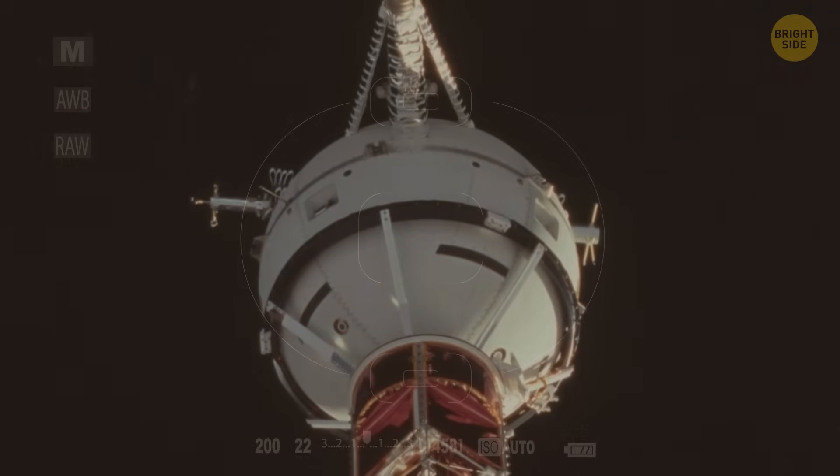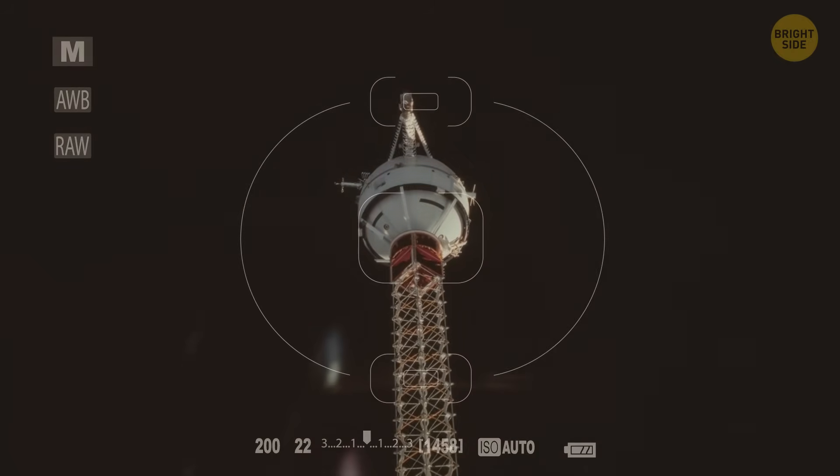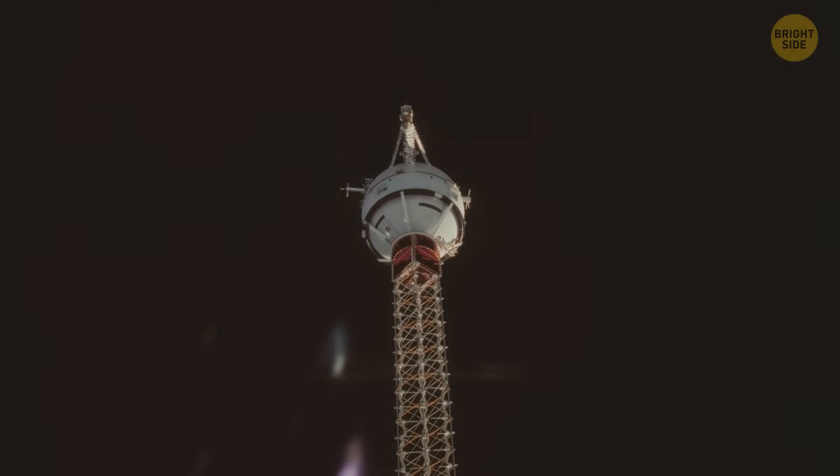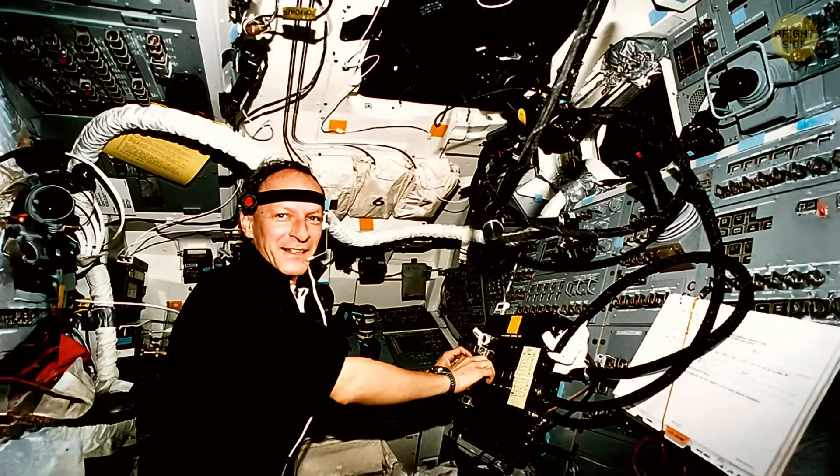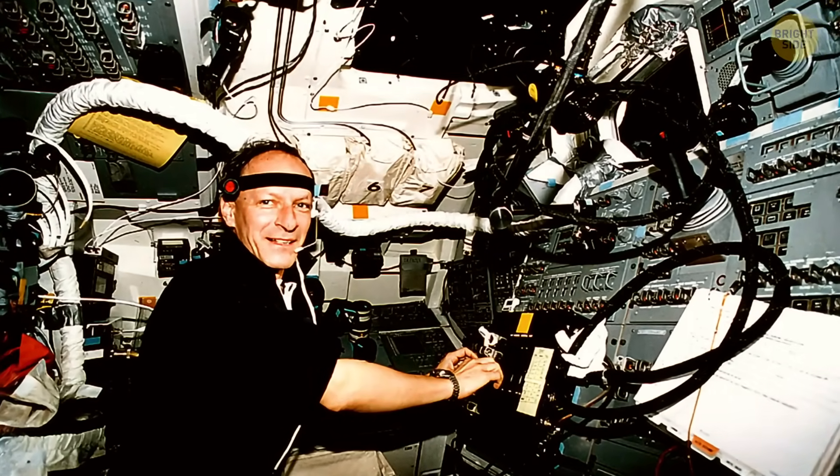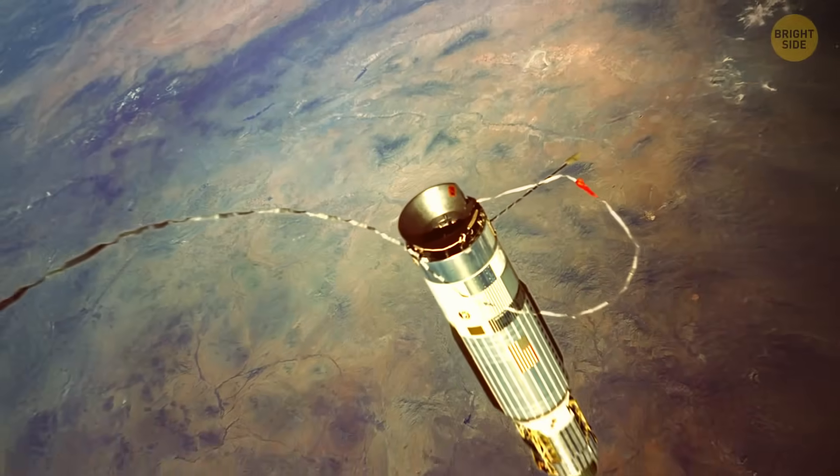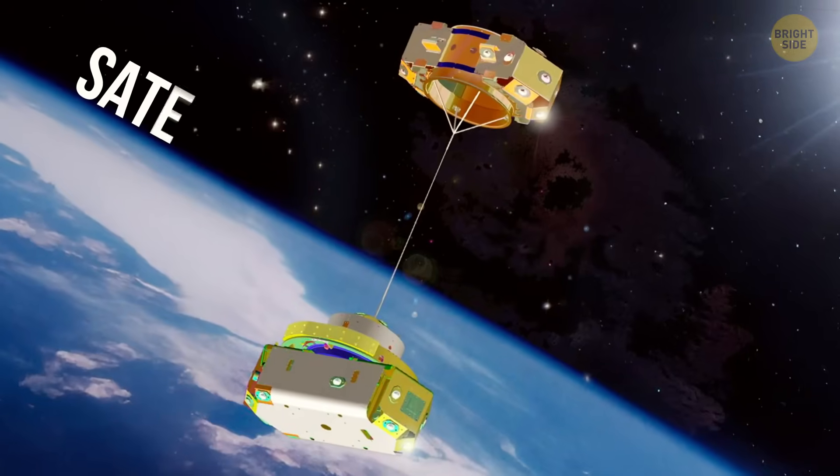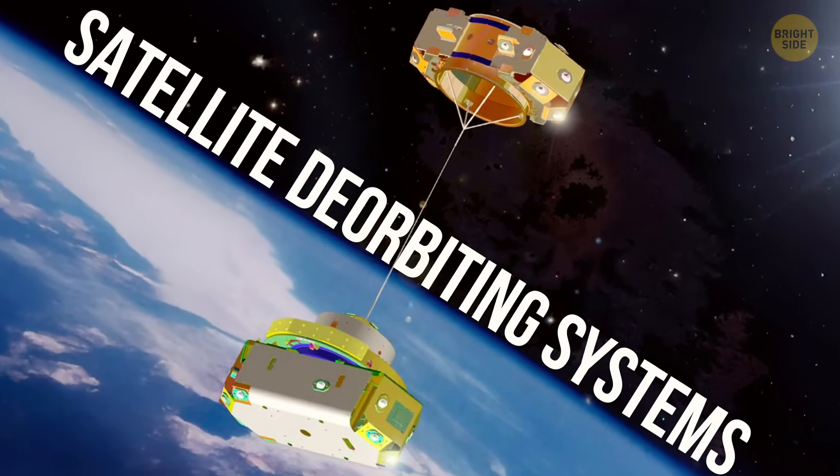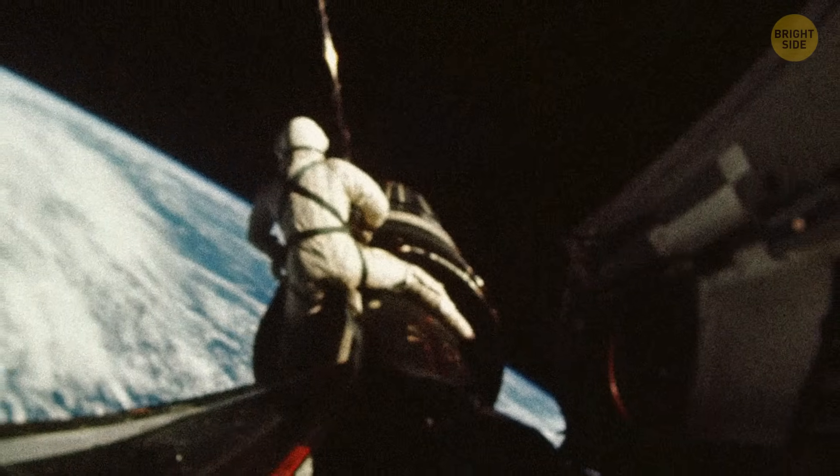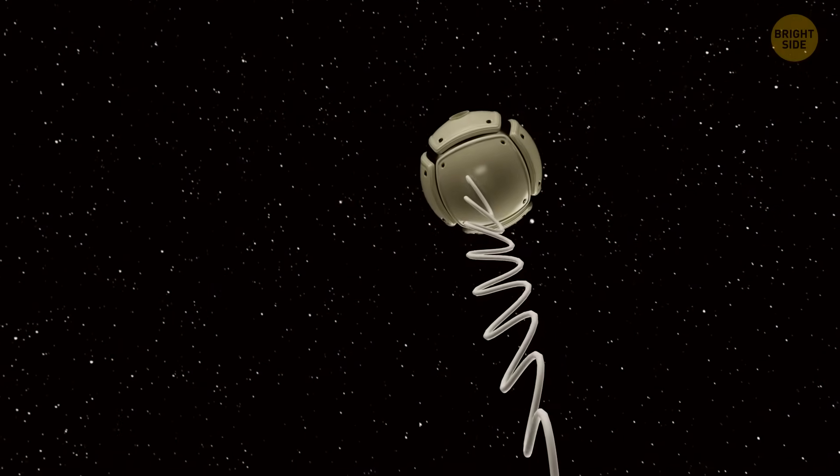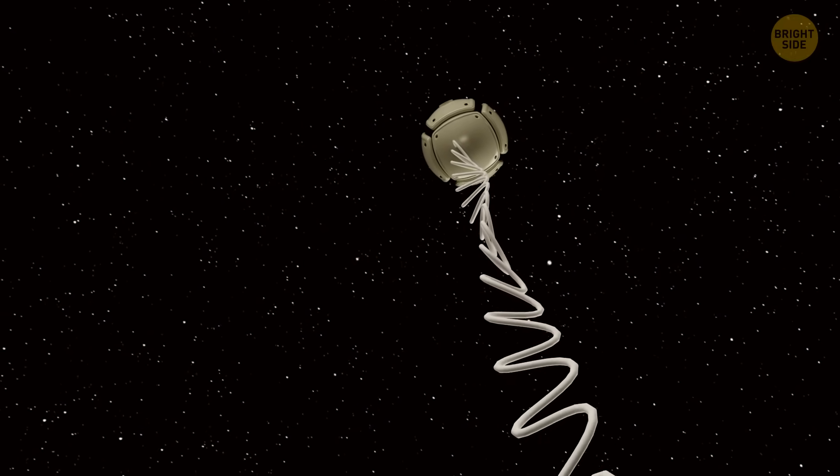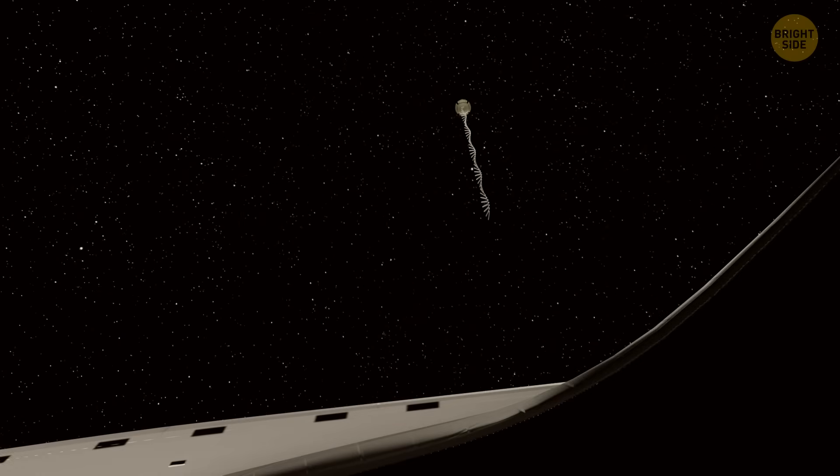Even though TSS-1R ended with a literal snap, it left behind valuable data. Engineers learned more about how tether systems behave in orbit, and the concept is still alive today. Researchers keep looking at space tethers for everything from satellite deorbiting systems to futuristic power stations in orbit. So that broken cable might have been a letdown in 1996, but it wasn't the end of the story.